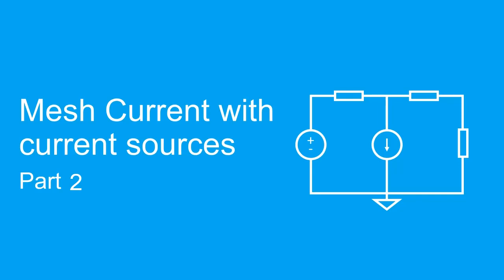In this video, we will solve another mesh current problem with a current source. Only this time, the current source will be placed on the common branch between meshes.